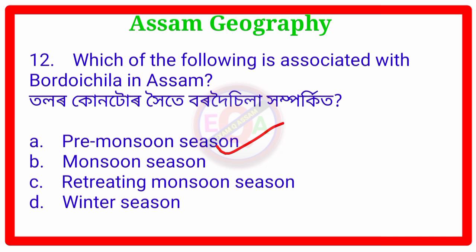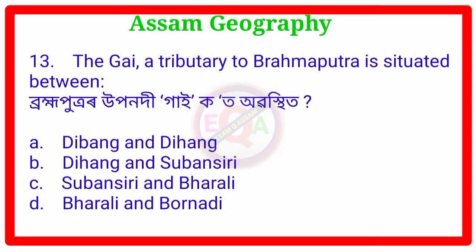Question Number 13. The island attributed to Brahmaputra — Brahmaputra Upanadi — is situated where? Kurabasthita.